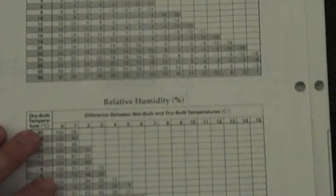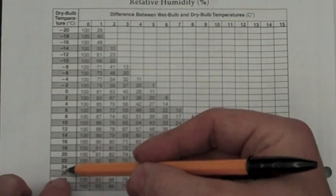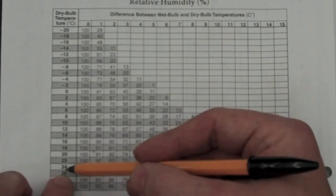And then for the humidity, you do the exact same thing. You find between 24 and 26, there's a 25 degree dry bulb.